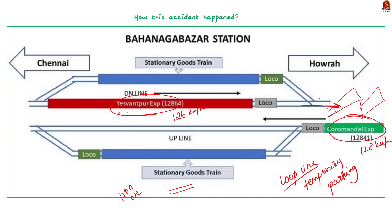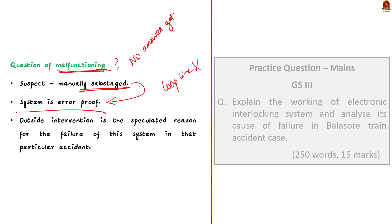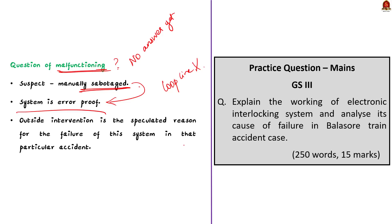Now, you may have a question whether there is a malfunctioning in the system. See, there is no concrete answer for this question yet. But the railway officials suspect that someone might have manually sabotaged the electronic interlocking system. Railway officials think so because this system is error proof. If it worked in normal condition, it wouldn't have directed the Coromandel Express to the loop line. The possibility of sabotage of the system might have directed the Coromandel Express to the loop line where a goods train is already standing. So, as of now, outside intervention is the speculated reason for the failure of this system in that particular accident. But we have to wait and see how this investigation goes on in future. I hope this explanation gave you a better understanding of the interlocking system and its components. With the learned points in mind, now we will move on to the next article discussion.